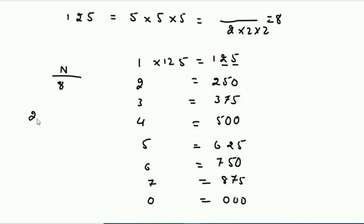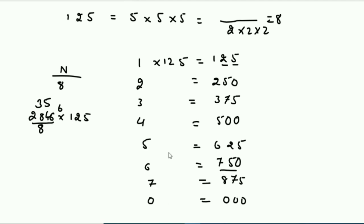Example: 286 multiplied by 125. Divide 286 by 8. 24 goes into 28 — 3 times with remainder 4. 4 carries: 46 divided by 8 is 5, remainder 6. Remainder 6 corresponds to last three digits 750. So the answer is 35750.